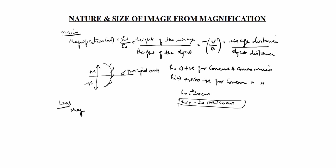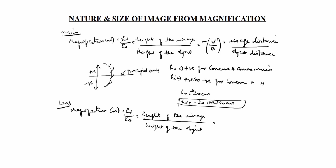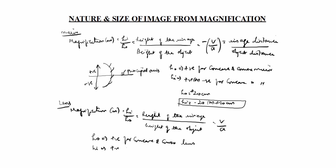The lens magnification formula is m equal to hi by ho — height of the image by height of the object — equal to v by u. Note: for the mirror it was minus v by u, but for lens it is v by u only. v is image distance, u is object distance. ho is positive for both concave and convex lens; hi can be positive or negative for concave and convex lens.